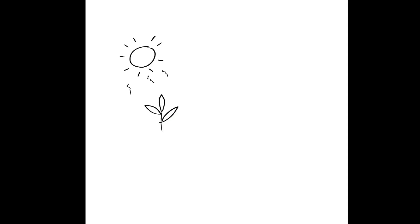Now we're going to talk about energy relationships. Remember, all energy actually comes from the sun. According to the 10% rule, 100% of that energy goes into plants. There are 1,000 kilocalories available at the producer level — that is 100% efficiency. Go plants!